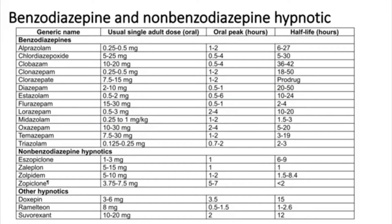Under the benzodiazepine group, we have alprazolam, chlordiazepoxide, triazolam, clonazepam, diazepam, and many others. In the emergency room, the two most common drugs used are lorazepam and midazolam; diazepam is also used in many departments. Non-benzodiazepine hypnotics and other hypnotics also fall into a separate category. All these drugs have similar effectiveness in patient treatment, but we are discussing benzodiazepine overdose specifically.